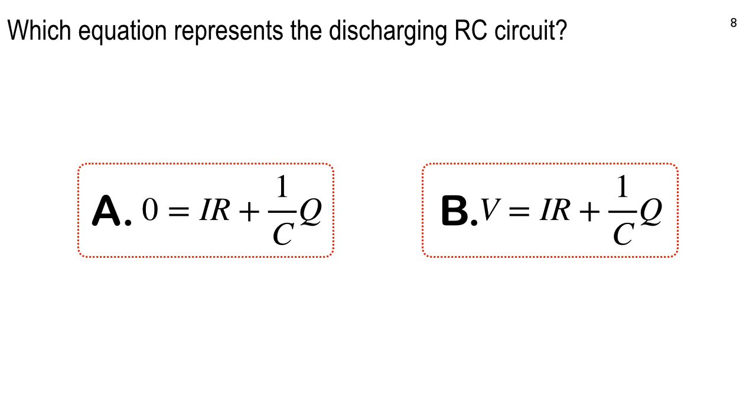Clicker question. Number one is this. Which equation represents the discharging RC circuit? Okay? Yeah, this is the right one. A is correct because this means your battery is out. You've taken the battery out of the circuit. So if you answered B, just make sure that you make a note of why this is the correct.